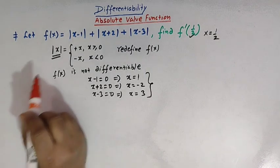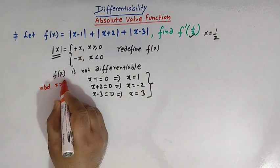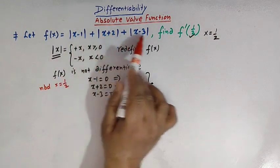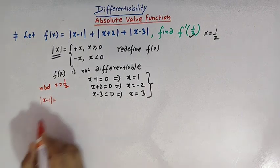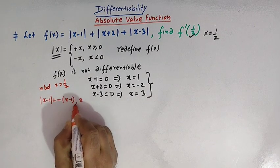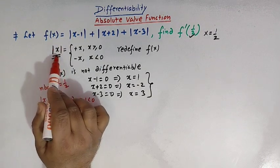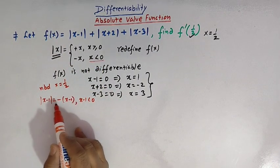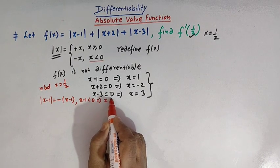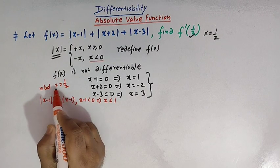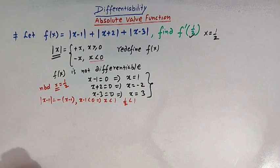Now let us define f of x in the neighborhood of x equal to one half, taking these three terms one by one. Mod of x minus one equals negative of x minus one whenever x minus one is less than zero, which implies x is less than one. Since x is equal to one half and one half is less than one, this definition applies here.